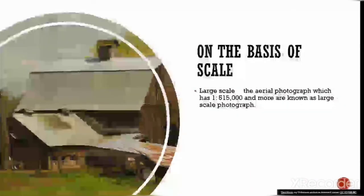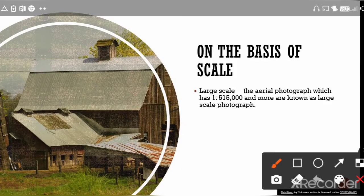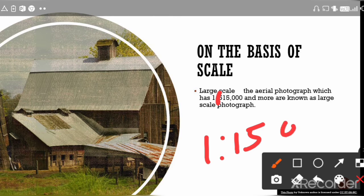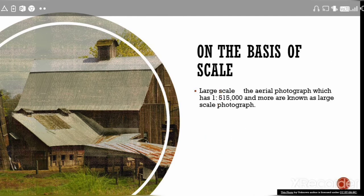On the basis of scale, there are three types. Large-scale photographs are aerial photographs with a scale of 1:50,000 or larger — meaning a scale of 1:50,000 and more is known as a large-scale photograph. In large-scale photographs, a small area is shown but in great detail and clarity.